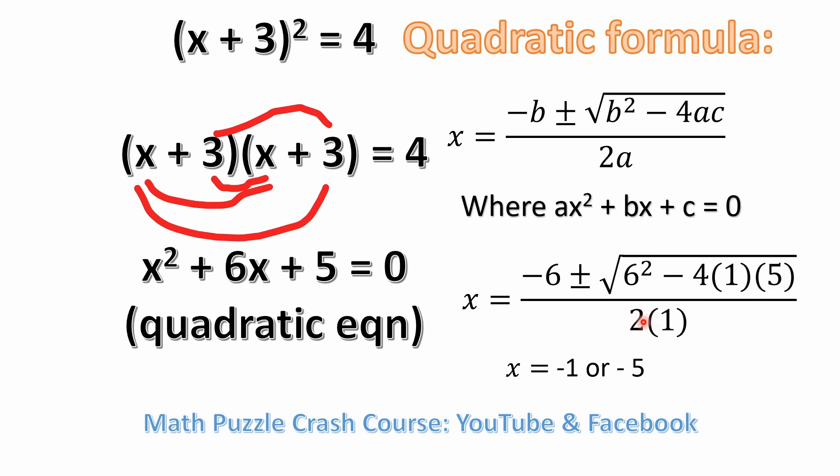And then in the denominator, we have 2 times 1, because a is 1. Now, if you work this out, you notice there's a plus or minus sign. So that's telling us there's two possible solutions to this. One is x equals minus 1. And the other is x equals minus 5.